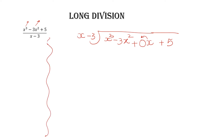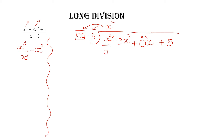In the rough column, write the first term of the dividend and divide it with the first term of the divisor. x³ divided by x — subtracting powers, 3 minus 1 gives you x². Write that in the quotient. Now one by one multiply x² with the divisor: x² times x gives you x³, and x² times -3 gives you -3x².